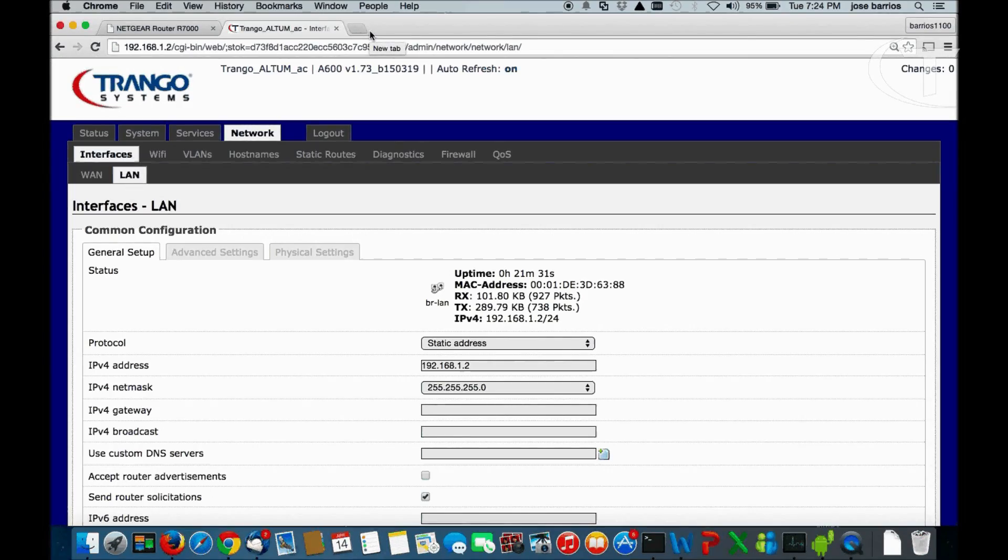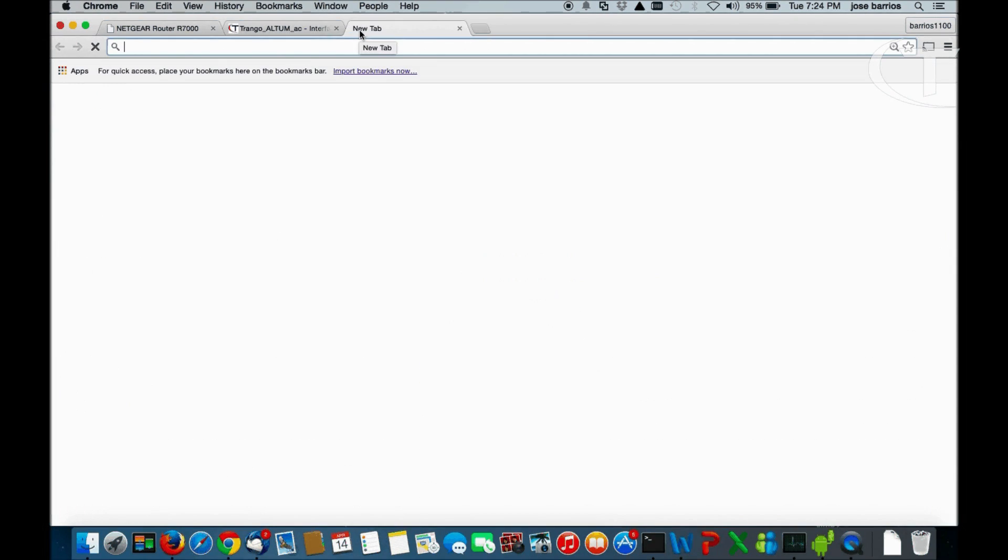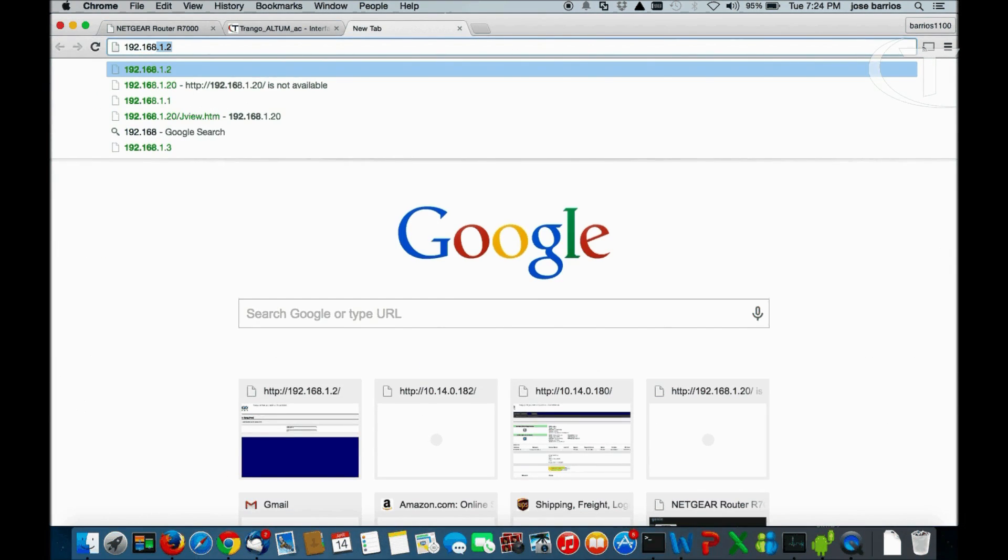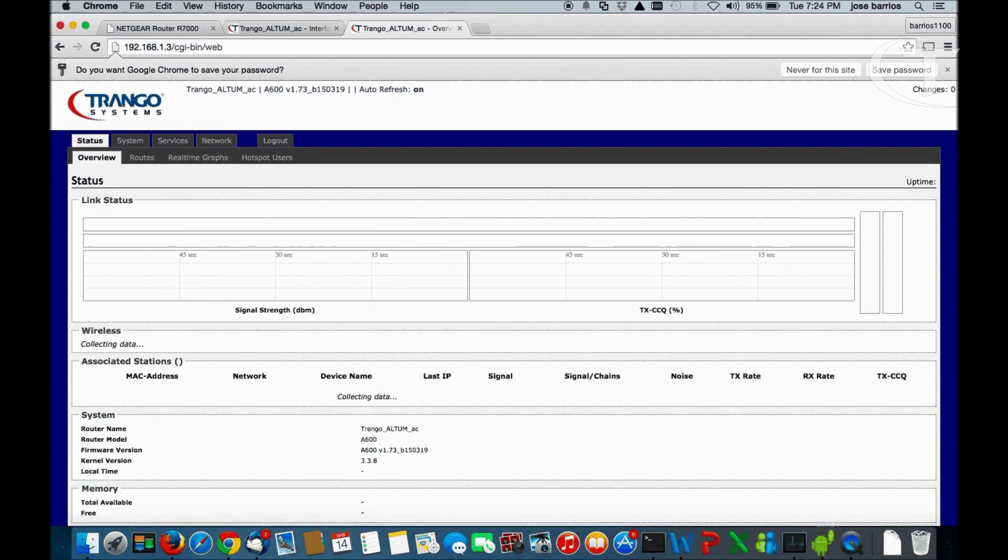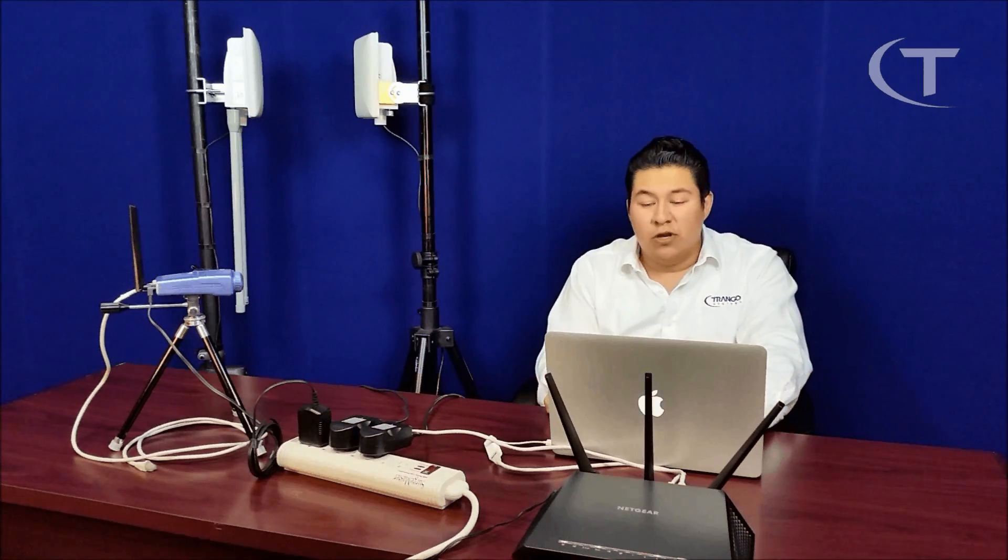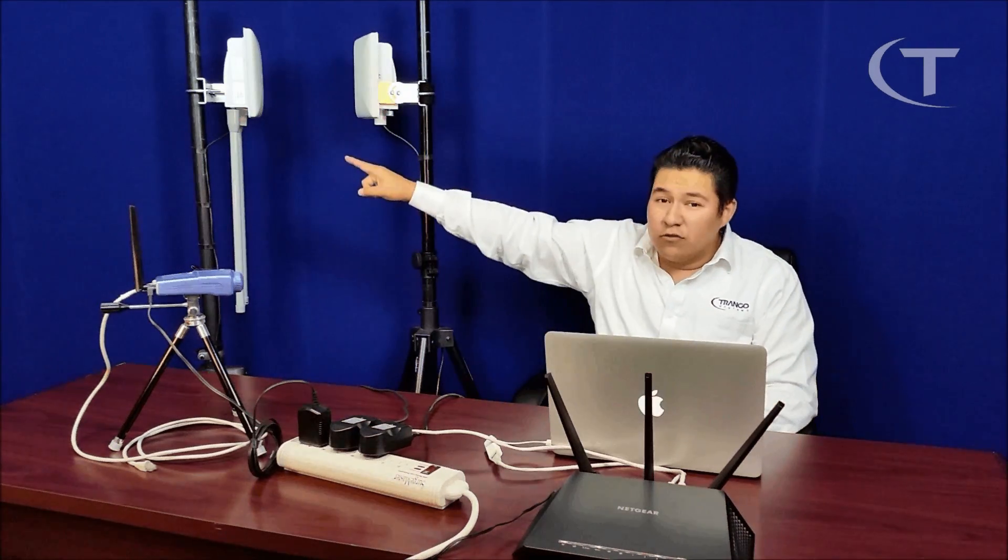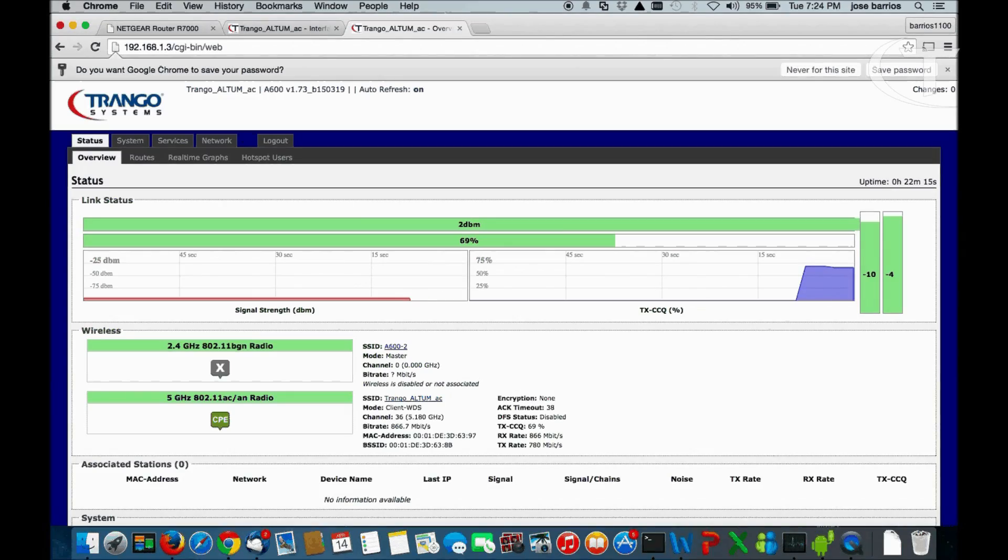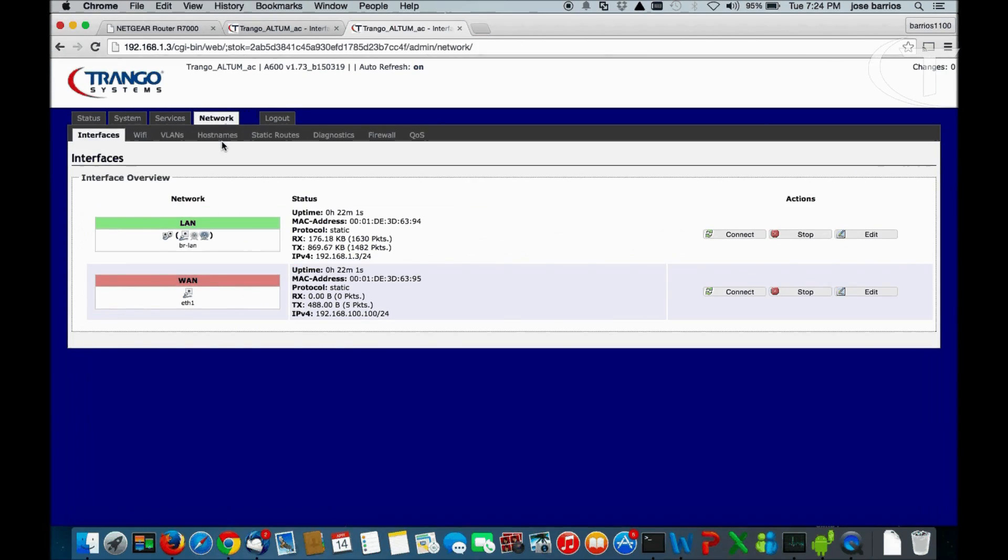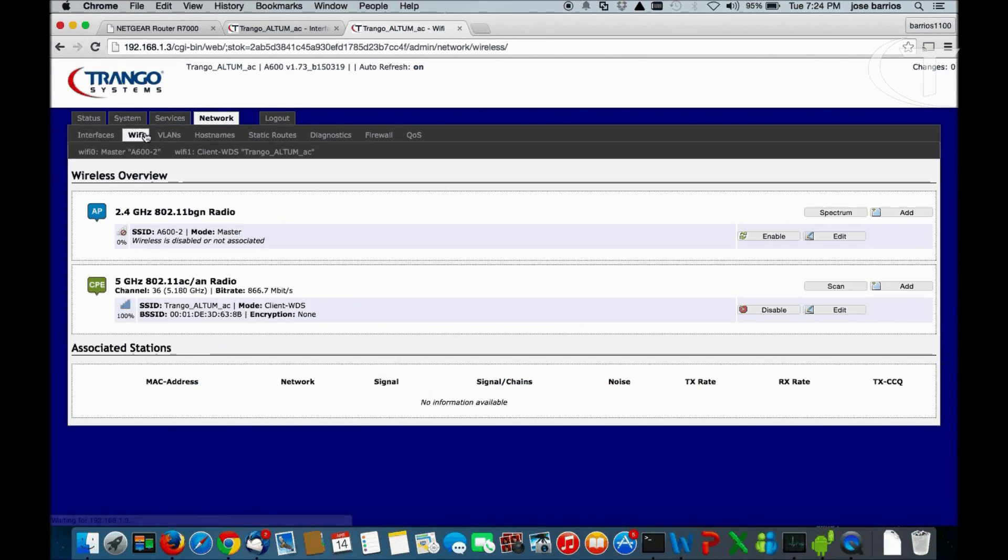So now we're going to log into the station site. Remember, we said we assigned previously the static IP, .3. So right now we're communicating with the far side radio, going over the point-to-point link, logging into the station site. Now on the station site, we're going to take a look at the Wi-Fi settings. We're going to go to Network, Wi-Fi.